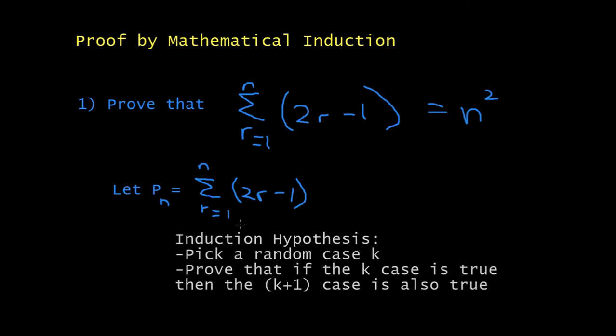Step 1, for the exam, is you have to write this equation. You have to say, let Pn is equal to the summation of 2r minus 1. Because you need to give this side of the equation a new name, like Pn, so you could work with it later on.